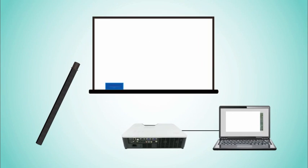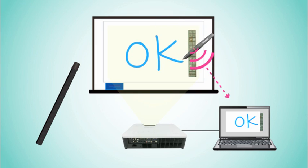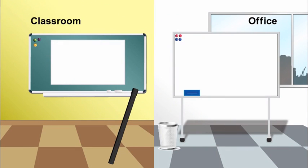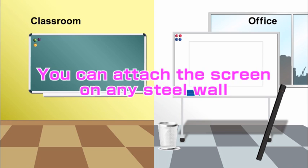Attach the magnetic screen to your existing whiteboard and connect the pen to your PC. No wiring is needed. The lesson or presentation can be started right away. The screen comes with its own carrying case for easy portability.